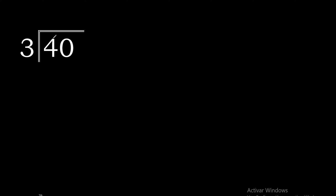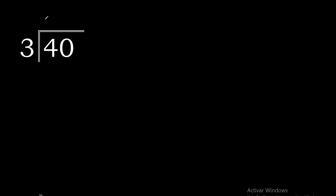40 divided by 3. 4 is not less than 3, therefore we work with 4. 3 multiplied by 2 is 6 — excessive. Multiplied by 1 is 3; 3 is the closest. 4 minus 3 is 1.